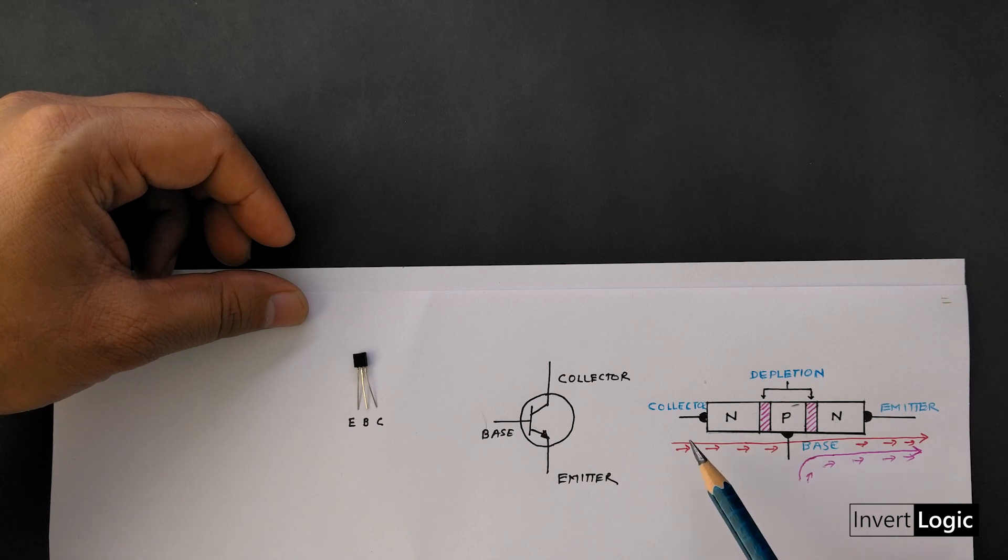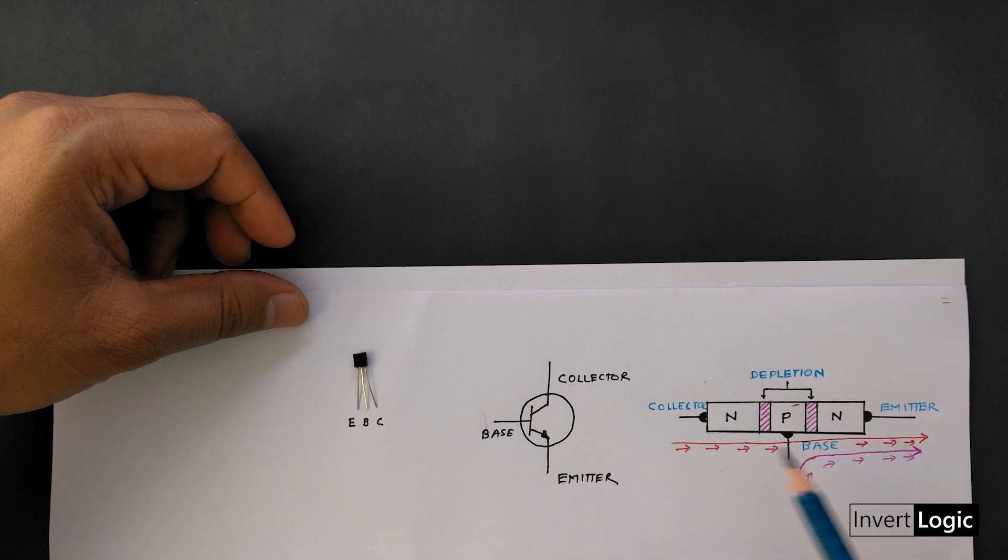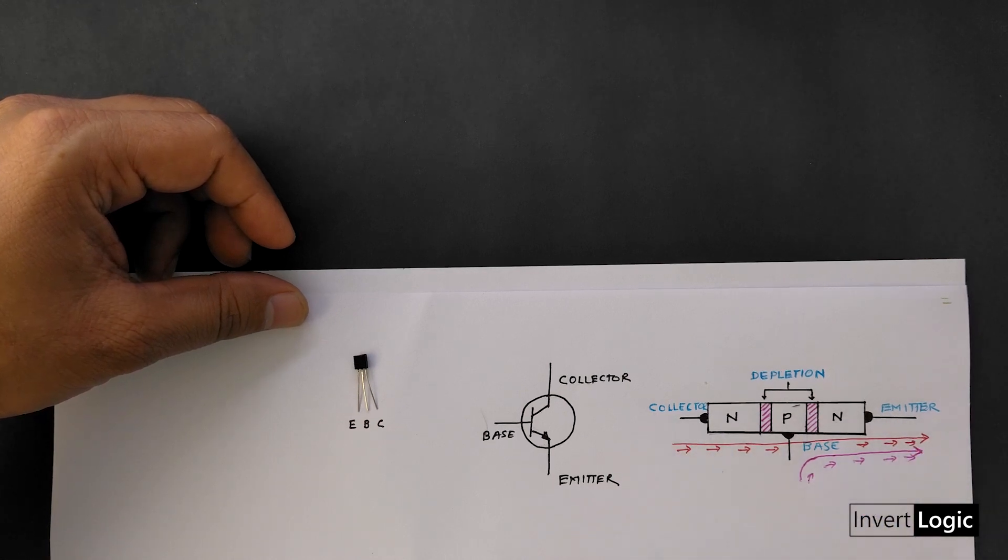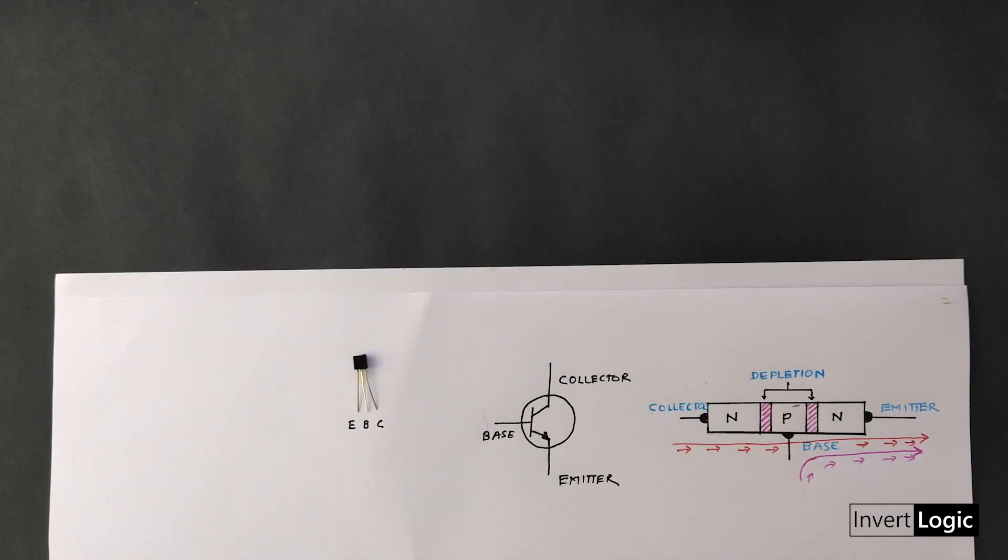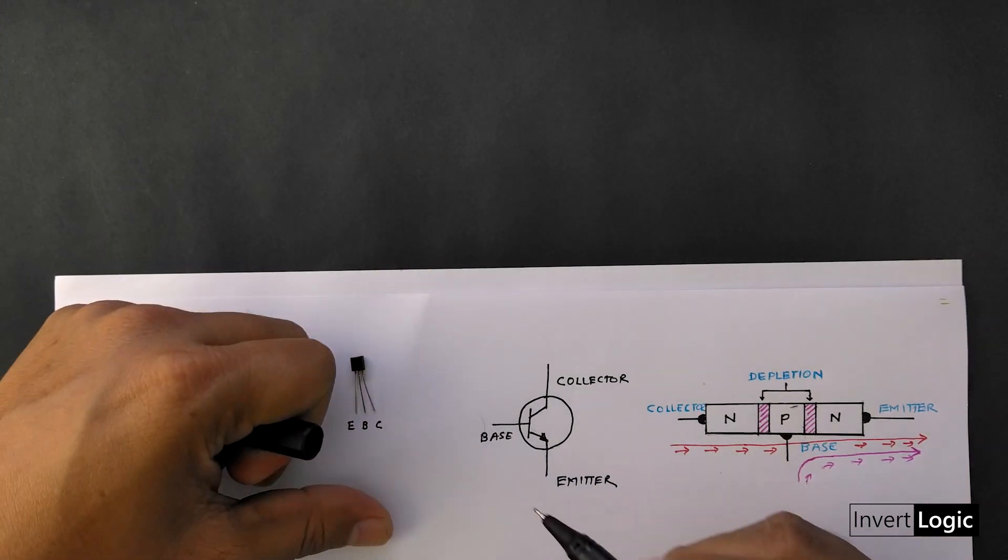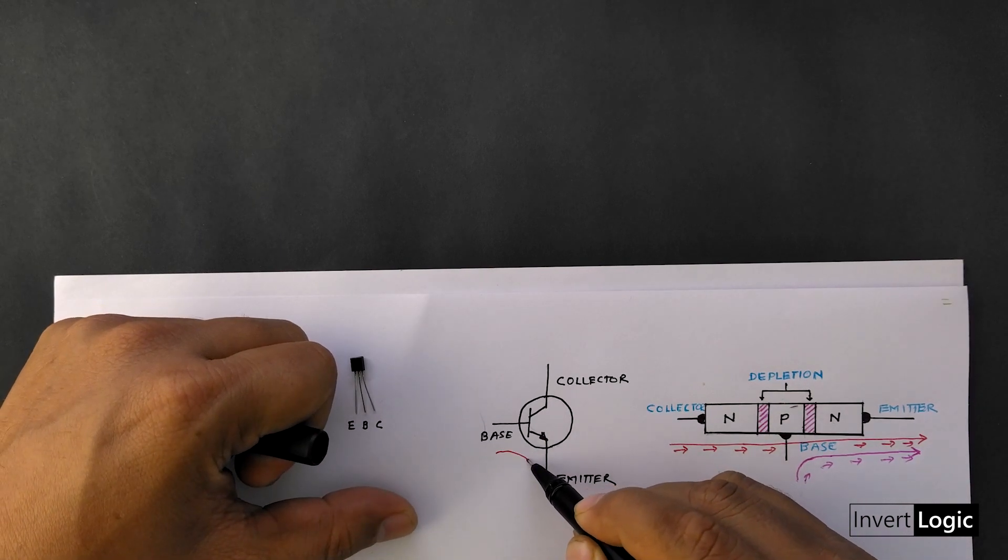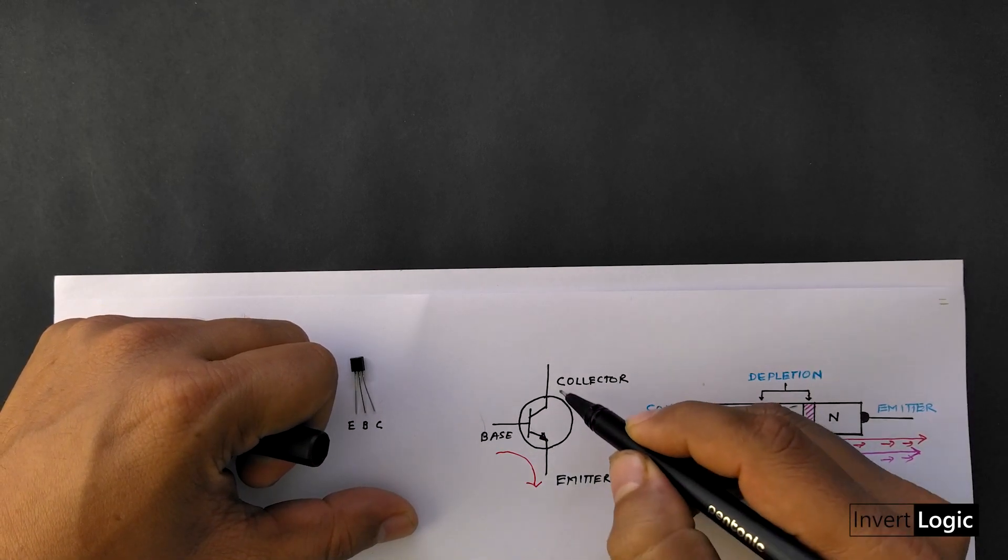Transistor is a current controlled switch. So if you provide a very small amount of current from the base to the emitter, then much larger current will flow from the collector to the emitter and the transistor will switch on. Now since much larger current can flow from the collector to emitter, the transistor can also be used as an amplifier to amplify weak signals.